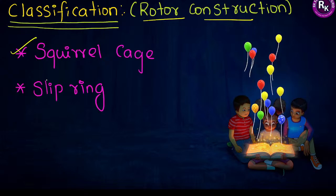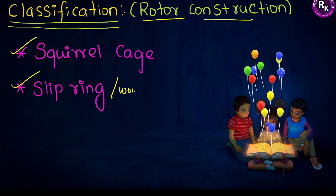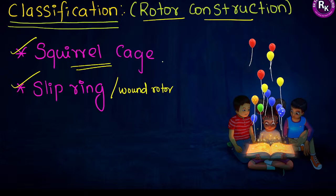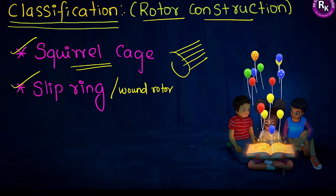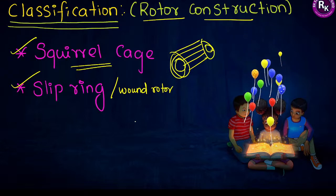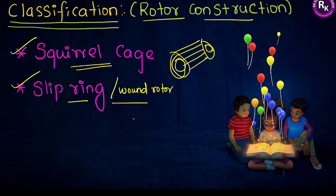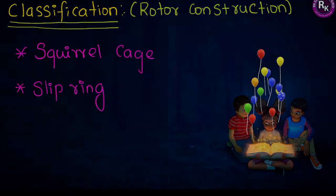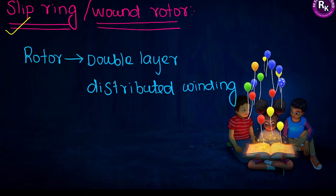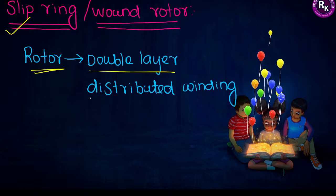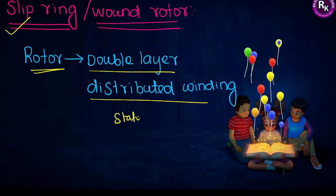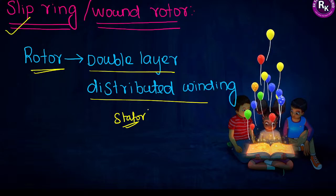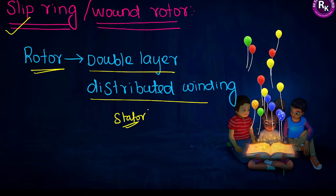Based on rotor structure, induction machines are classified into two types: squirrel cage induction motor and slip ring (wound rotor) induction motor. In the squirrel cage type, the rotor has copper bars that are short-circuited on both sides, inclined at a particular angle. In slip ring type, the stator and rotor structures are similar to each other — both designed with double-layer distributed winding. The number of phases and poles on stator and rotor are the same in the slip ring type.